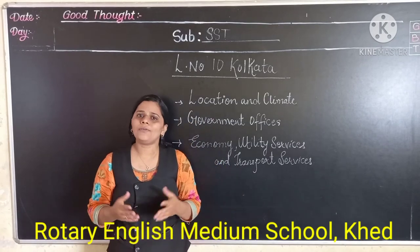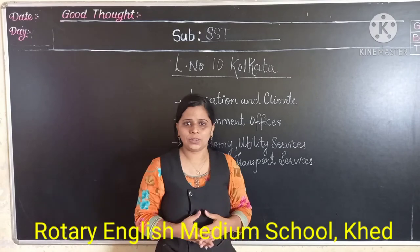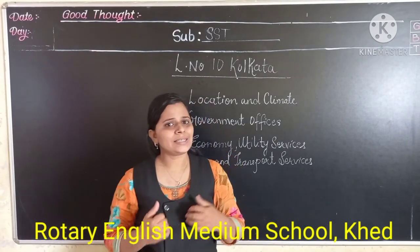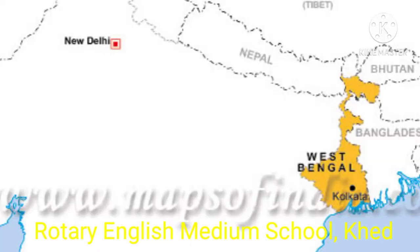You have learned in Lesson 3 about the states and the capital. Kolkata is the capital of West Bengal. You can see here in the map where West Bengal is — it is in the eastern part of India.